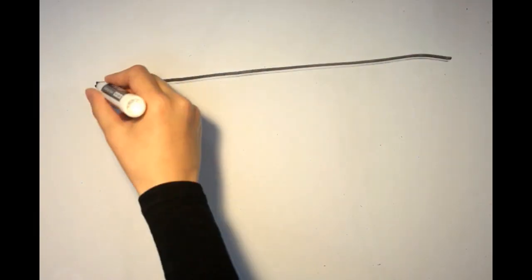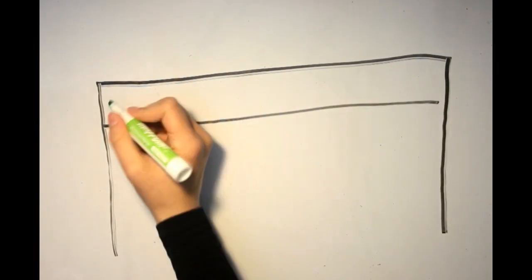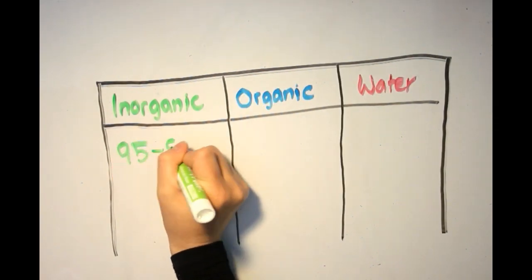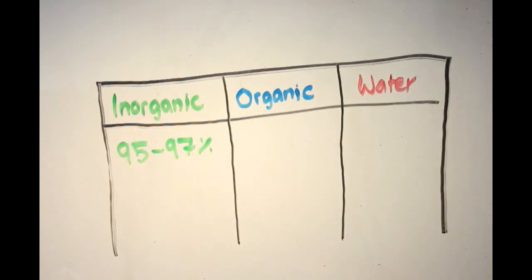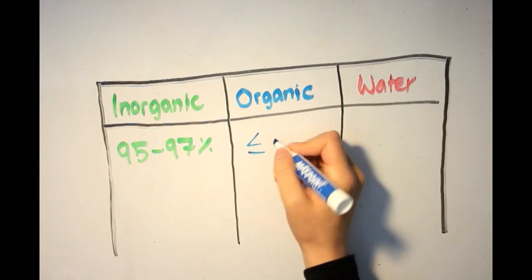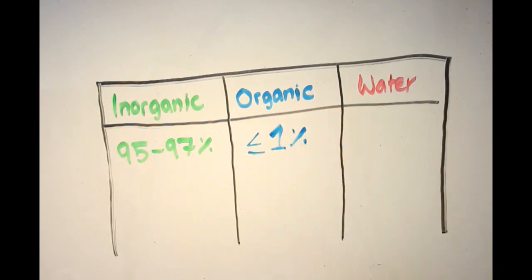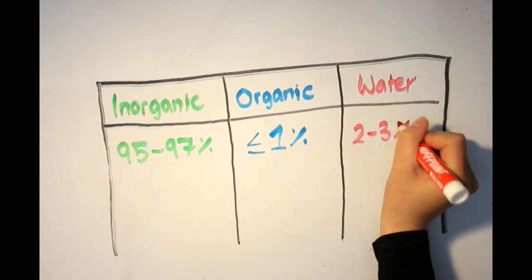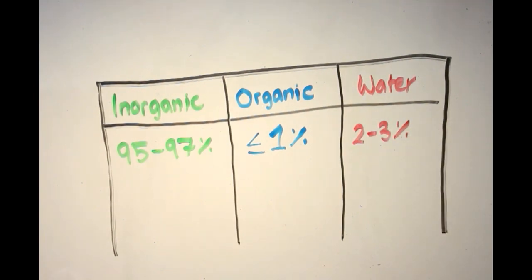So, what makes up enamel? Enamel is made up of three parts. The inorganic part is made up of minerals which form 95-97% of the structure, while the organic material is less than 1%. The remaining 2-3% is made up of water.